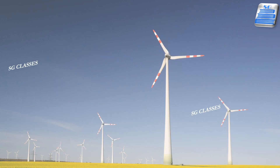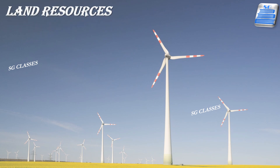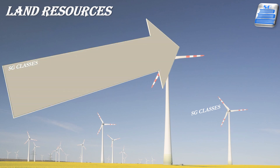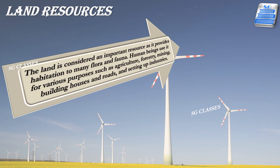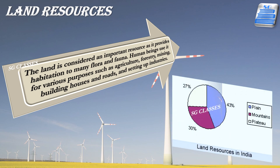Land is a natural resource of utmost importance. It supports natural vegetation, wildlife, human life, economic activities, and transport and communication systems. India has land under a variety of relief features — mountains, plateaus, plains and islands. As shown in the pie chart, 43% is plains, 30% is mountain and 27% is plateau.